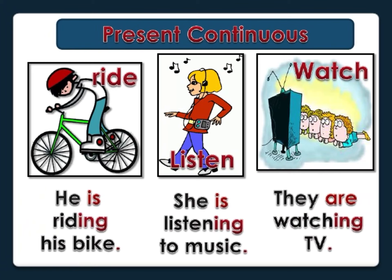Siempre vamos a colocar el pronombre. El verbo to be que corresponde a la persona de la cual estamos hablando. Recuerden que para tercera persona es is en verbo to be. Y tenemos también el verbo principal. Y al final del verbo principal siempre hay un I-N-G — ahí estamos utilizando lo que es el ando, endo, que es en español. He is riding his bike — él está conduciendo su bicicleta. She is listening to music — ella está escuchando música. They are watching TV — ellos están mirando televisión.